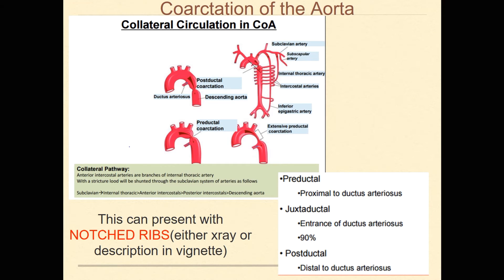Another thing is coarctation of the aorta. This is actually quite common — more so than quite a few heart defects, and I have actually seen this before. Coarctation of the aorta is really just an impingement or stenosis of the aortic arch in different places. There's post-ductal: if the impingement occurs more towards the descending aorta, past the ductus arteriosus, it's known as post-ductal.